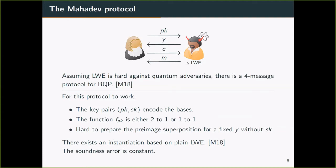For this approach to work, the verifier samples the key pair according to a local term. And from the public key, PK, the prover is unable to tell if it's going to measure in X or Z basis. Also, it must be hard for the prover to re-prepare the preimage superposition without the knowledge of the secret key. Mahadev shows that there exists an instantiation based on plain LWE. Also, because the prover can always choose to win a test round, the soundness error is constant.